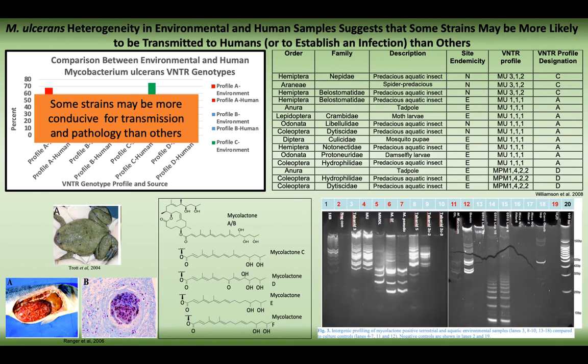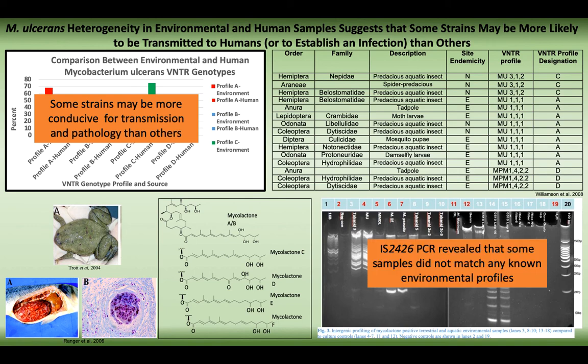We also targeted the intergenic regions between IS2404 and IS2606, called 2426 PCR, against a range of M. ulcerans and other mycolactone-producer isolates. What we found was that some M. ulcerans positive environmental samples did not match known M. ulcerans profiles or other mycolactone-producing mycobacteria profiles, showing that there are samples that don't match any known profiles — demonstrating a great deal of diversity. These preliminary data show M. ulcerans heterogeneity in environmental samples and suggest that some strains may be more likely to be transmitted to humans or to establish infection than others.